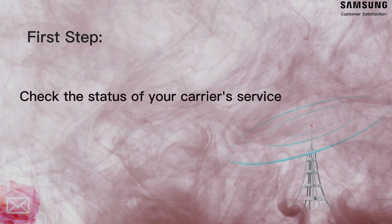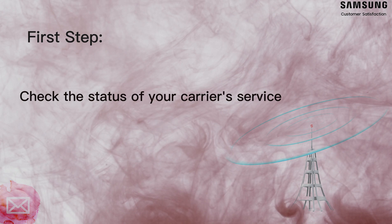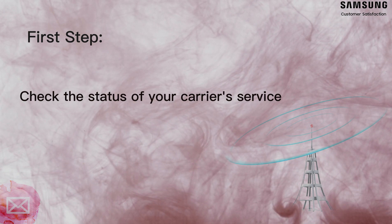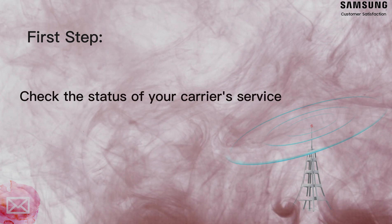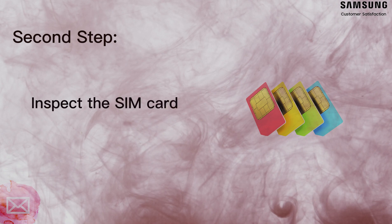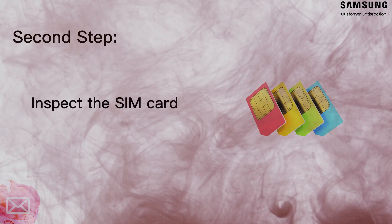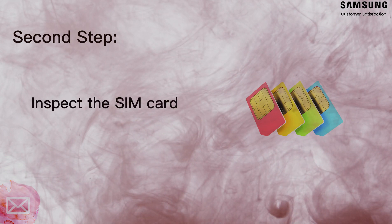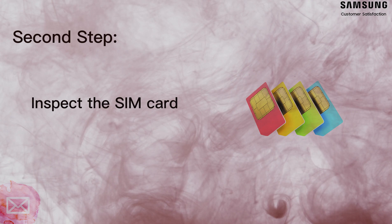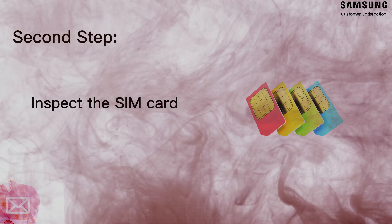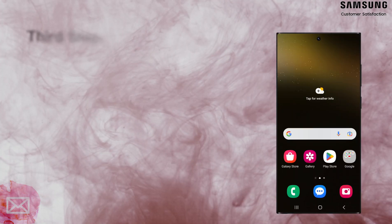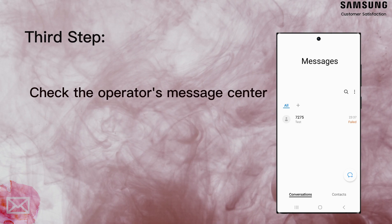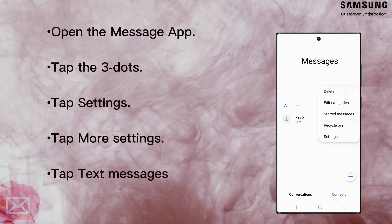First, ensure that your account is in good standing and that your service is operational. Check that the SIM card in your phone is properly placed and not damaged. If you need assistance testing your SIM or purchasing a replacement, check if the operator's message center number is stored in your device's settings.